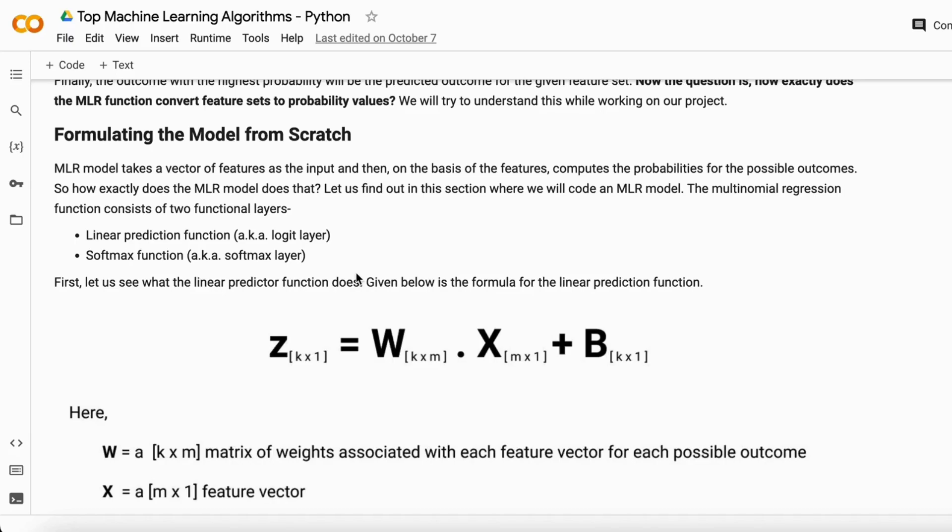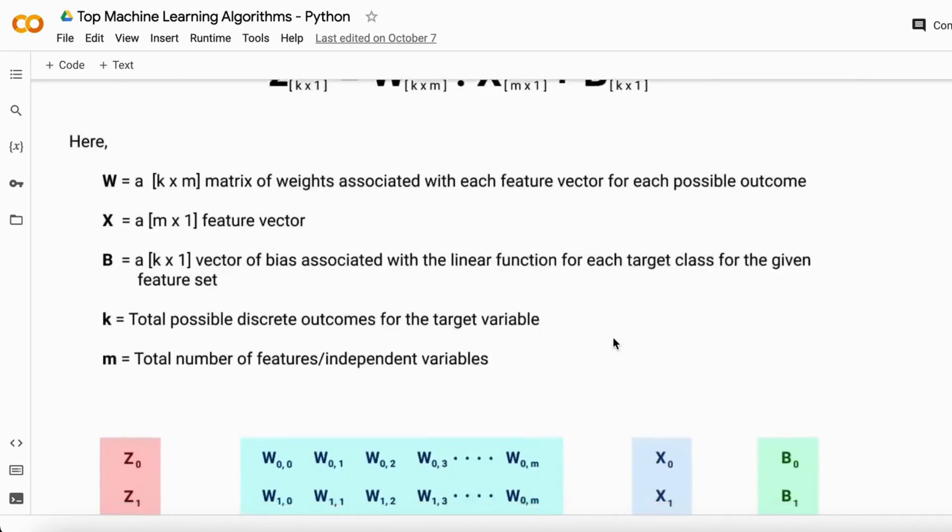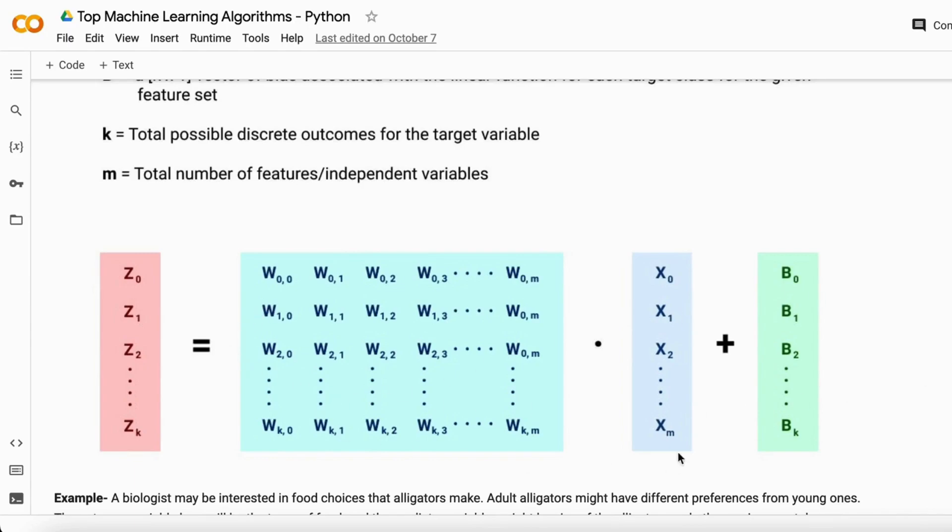As you guys know, this is our linear prediction function. The linear prediction function is y equals mx plus b, or z equals wx plus b, where z is your prediction, w is your weight, x is your input features, and b is the bias. You apply the soft max function on this equation and you will get multiple probabilities of all the labels in the target variable.